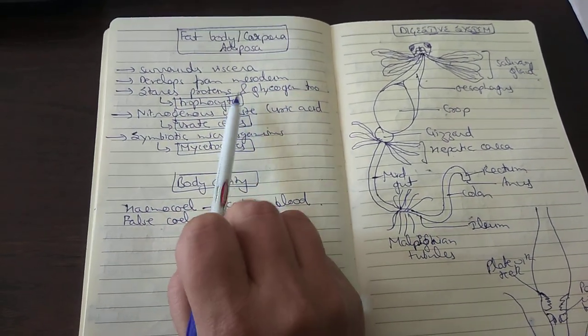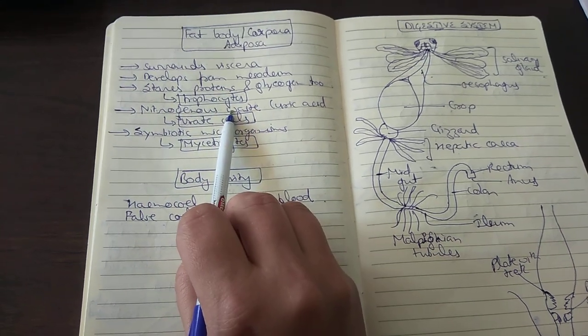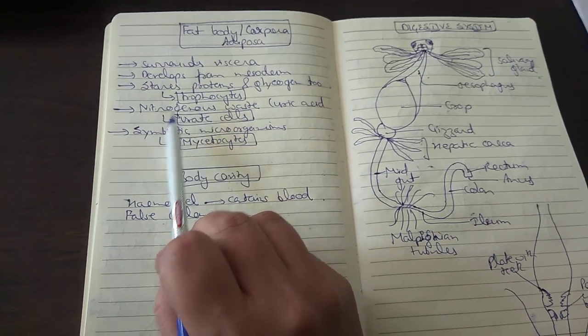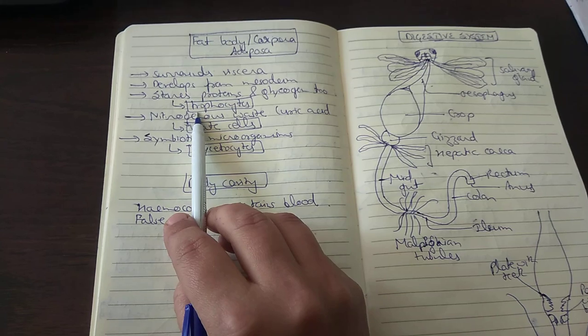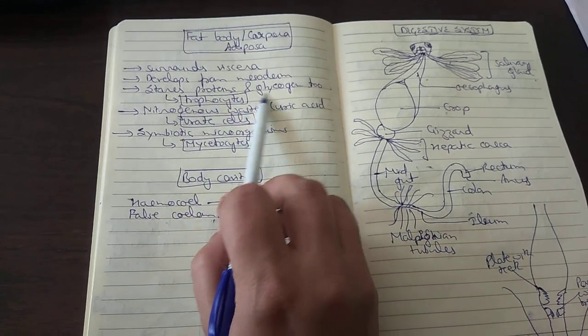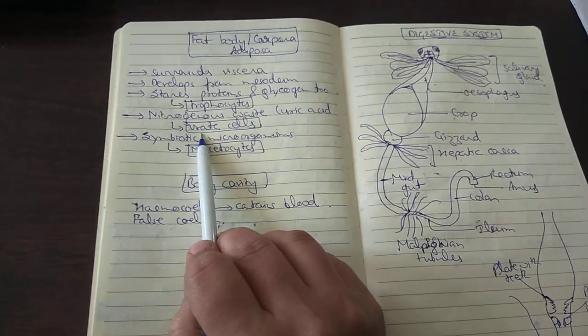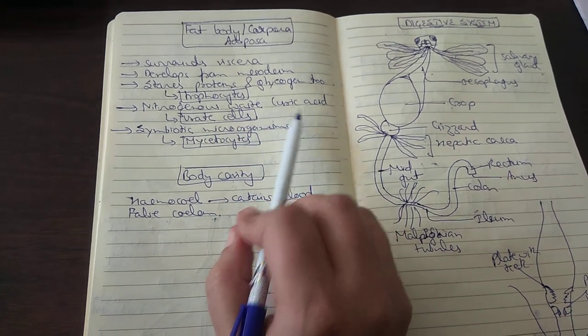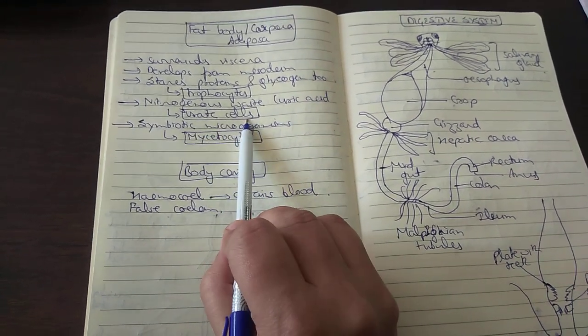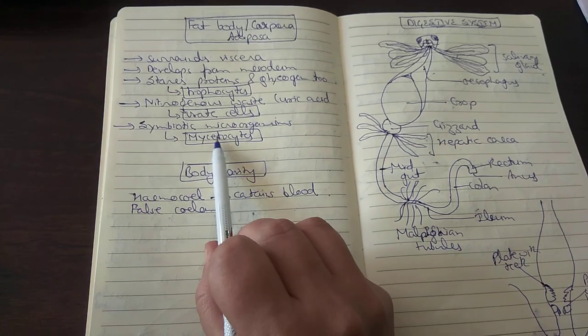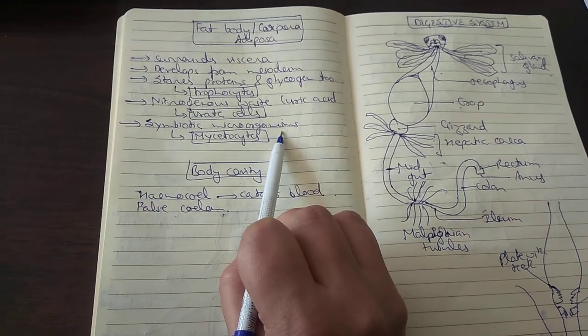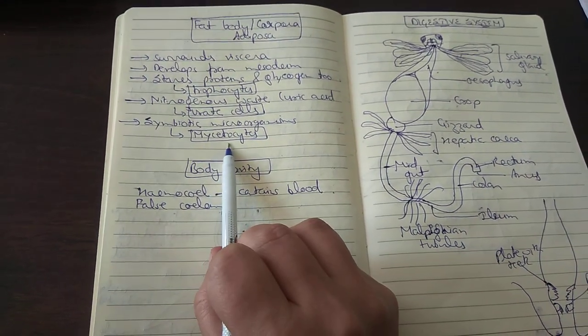It develops from mesoderm and apart from having fat itself, it also has certain specialized cells. Those are trophocytes which store protein and glycogen. They also store nitrogenous waste material in the form of uric acid, then they are referred to as urate cells. They also have symbiotic microorganisms, the bacteroids, then they are referred to as mycetocytes.